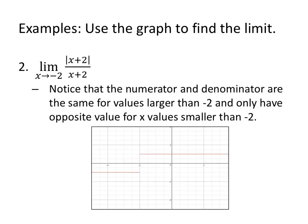All right. So this graph can be challenging. So let's take a closer look at it. The limit as x approaches negative 2 of the absolute value of x plus 2 over x plus 2. Notice that the numerator and denominator are exactly the same values for larger than negative 2 and only have the opposite values for x values smaller than negative 2. And for some people, that doesn't really make sense.